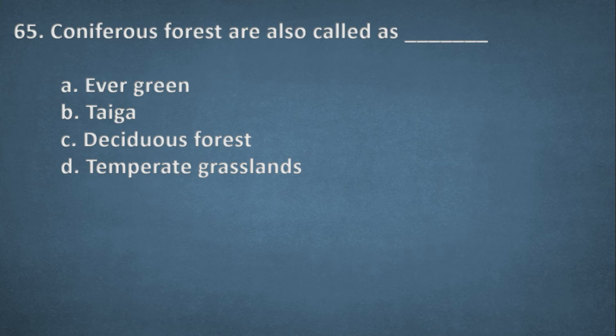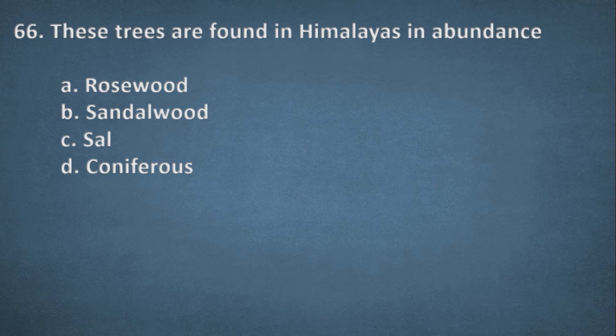Next one. Coniferous forests are also called as. Options: Evergreen, Taiga, Deciduous forests, Temperate grasslands. The right option, B, Taiga. Next one. These trees are found in Himalayas in abundance. Options: Rosewood, Sandalwood, Sal, Coniferous. The right option, D, Coniferous.